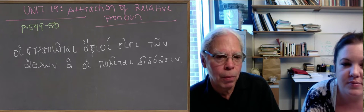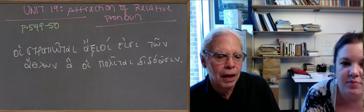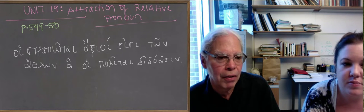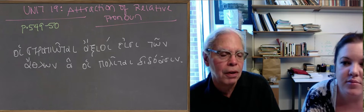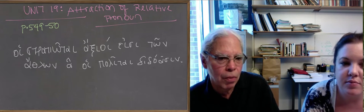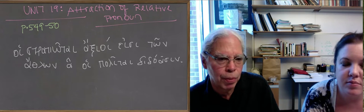axioi esse means are worthy. And then we've got the genitive ton athlon, athlon rather than athlon. The neuter noun of the second declension means a prize. So the soldiers are worthy of the prizes, neuter plural.